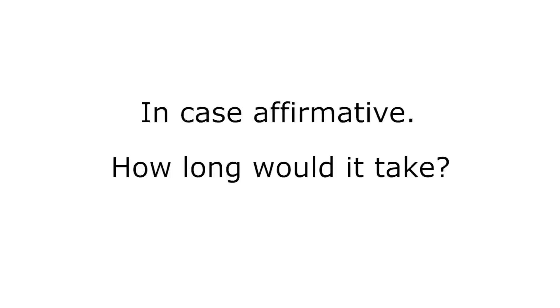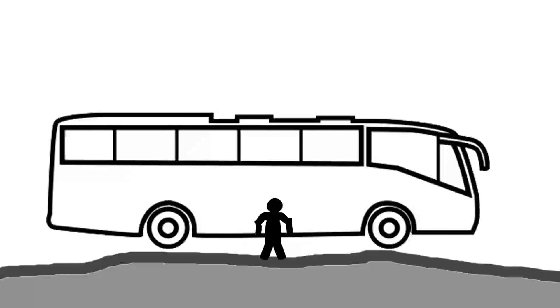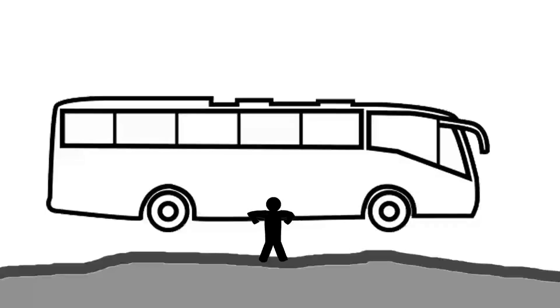In case affirmative, how long would it take? From the equation, space equals one half of the acceleration times the time squared, the time is the square root of twice the space divided by the acceleration. In order to reach a height of two meters, it will take 10.7 seconds.